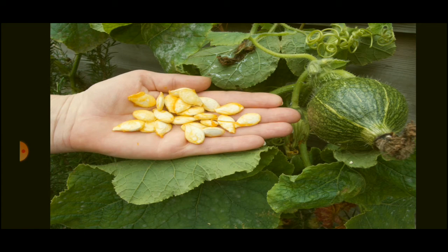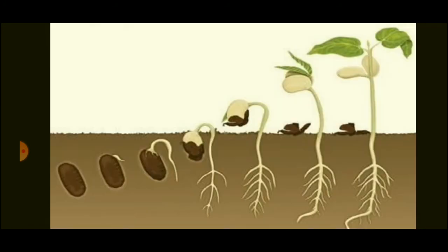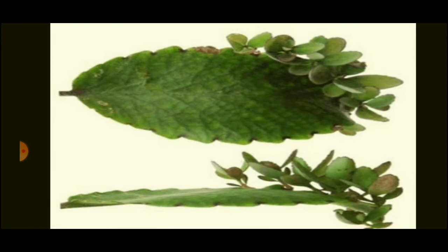Some plants do not have seeds. In such plants, new plants grow from the root, stem, or leaf. This is the example of bryophyllum, which grows a new plant from its leaf. Similarly, the rose plant can be grown from stem cuttings. So plants' reproduction — the growth of new plants — depends on either seeds or parts of the plant.